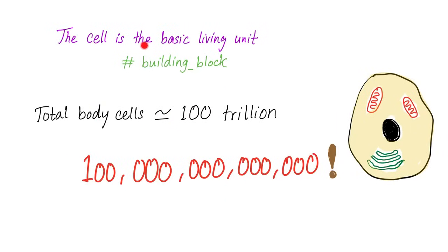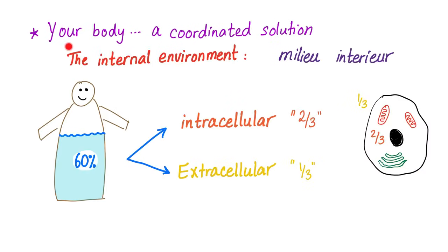As you know, the cell is the basic living unit, or the building block of your body. How many cells do you have? Around 100 trillion cells — that's amazing. Just think about that. Your body is a coordinated solution.